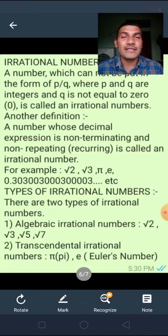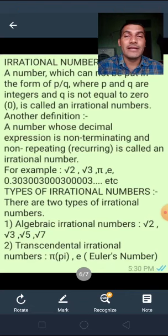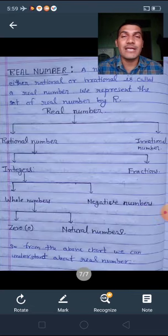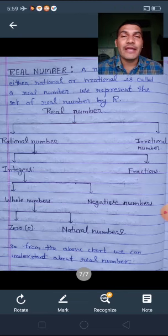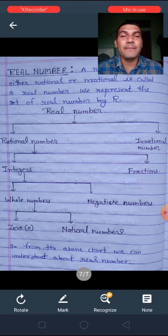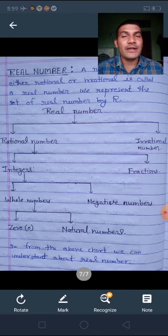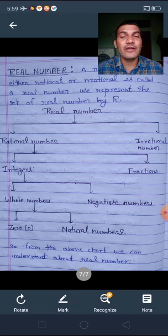Next is real numbers. A number which is either rational or irrational is called a real number. We represent the set of real numbers by capital R. About real numbers, we can understand more clearly by the given chart.